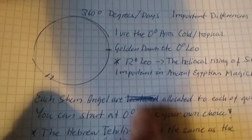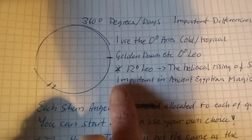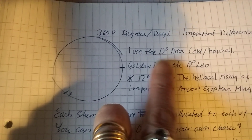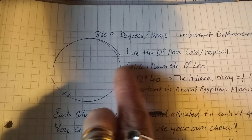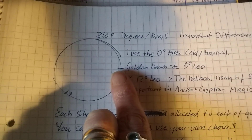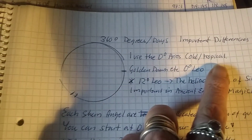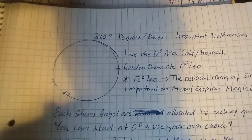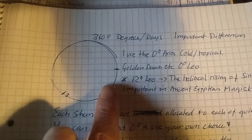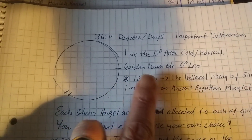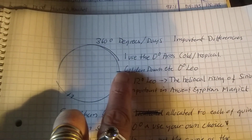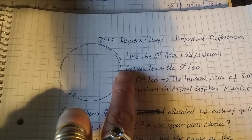But there are some things that are used in the different traditions. I always start with zero at Aries — the old, sometimes called the tropical or normal in some traditions. And Golden Dawn Aries lies usually about here in the astrological natal chart.